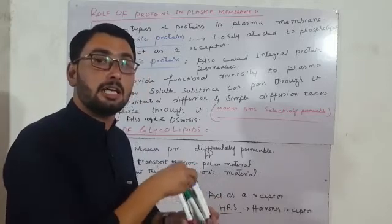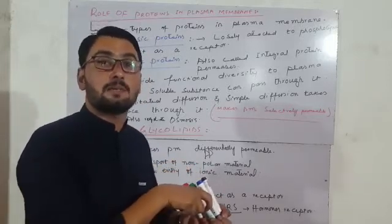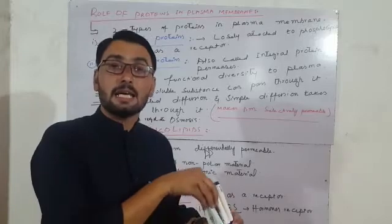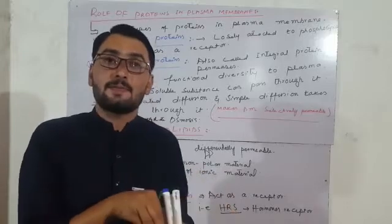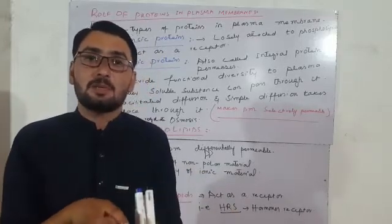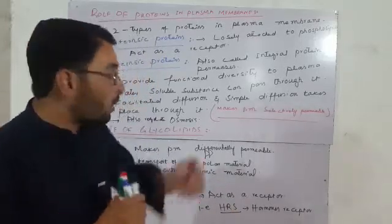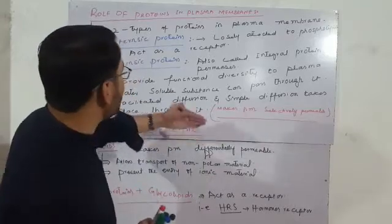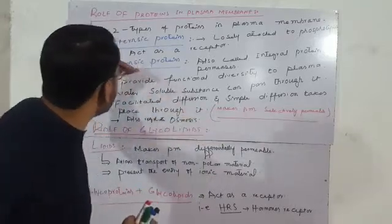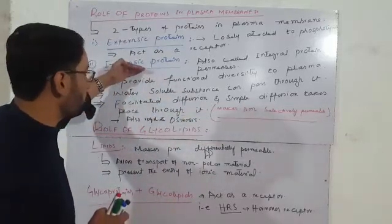The Singer and Nicholson model discusses how water-soluble substances, ionic substances, and chargeable substances interact with the membrane. This is referred to as functional diversity, and it is the role of intrinsic protein.